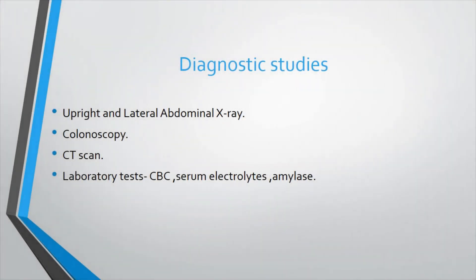Diagnostic studies include: first, history taking — signs and symptoms and physical examination. Next, upright and lateral abdominal X-ray, colonoscopy, and CT scan of the abdomen. Laboratory tests include complete blood count, serum electrolytes, and amylase.